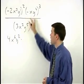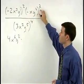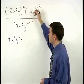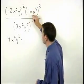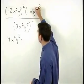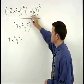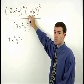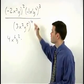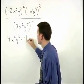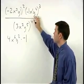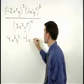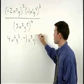This is all multiplied by negative x y to the fourth, cubed. Think of the negative as negative 1 and x as x to the first. So we cube our coefficient of negative 1, which is negative 1 times negative 1 times negative 1, or negative 1, and multiply each of our exponents by 3 to get x to the third y to the 12th.